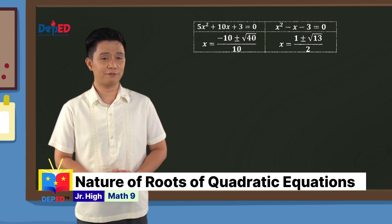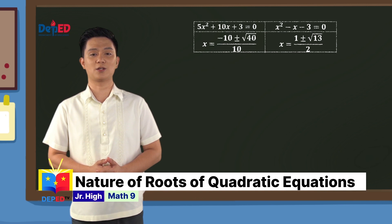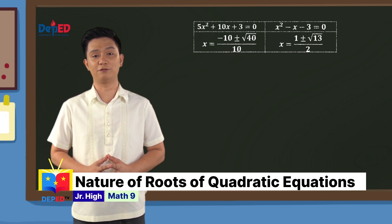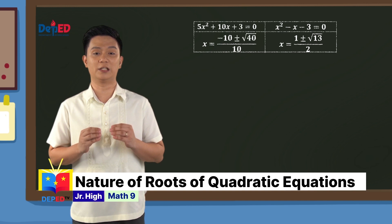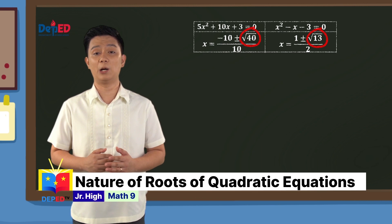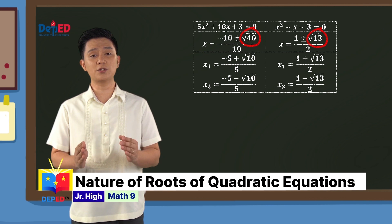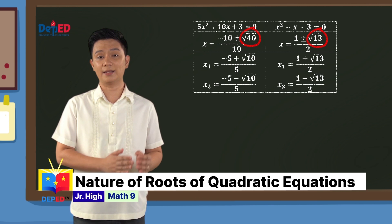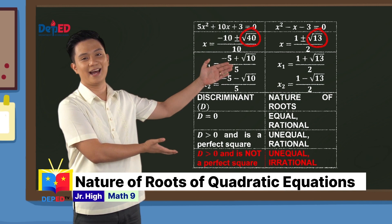Let us classify the discriminant of each equation in this pair and its influence on the nature of roots. The discriminant is the value of b² − 4ac that appears under the radical sign. 40 and 13 are both positive, but they are not perfect squares. Observe that the roots corresponding to such a discriminant are not equal and are irrational. We record this in our table of highlights.